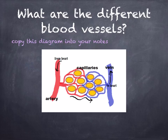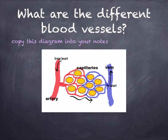How to remember which is which? Arteries carry blood away from the heart — artery begins with A and away begins with A. These then divide again and again to eventually form very tiny vessels called capillaries. The capillaries gradually join up with one another to form larger vessels called veins, which carry blood back to the heart.